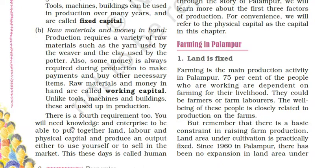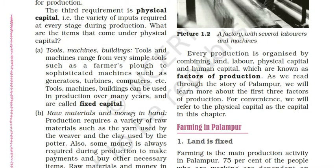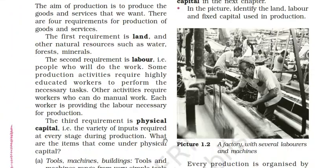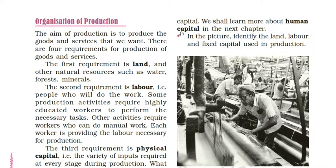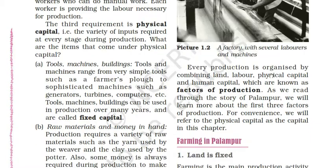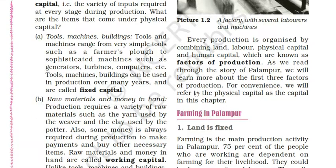The fourth requirement is knowledge and enterprise - you need these to put together land, labor, and physical capital to produce an output, either to use yourself or to sell in the market. This is called human capital. Every production is organized by combining land, labor, physical capital, and human capital, which are known as factors of production. We will refer to physical capital simply as capital in this chapter.